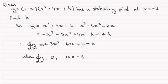I'm going to have 0 = -3(-3)², squaring it that's 9, times -3, that's -27. Here we have -6 times -3, which is +18. Then you've got the +4 and the -k.